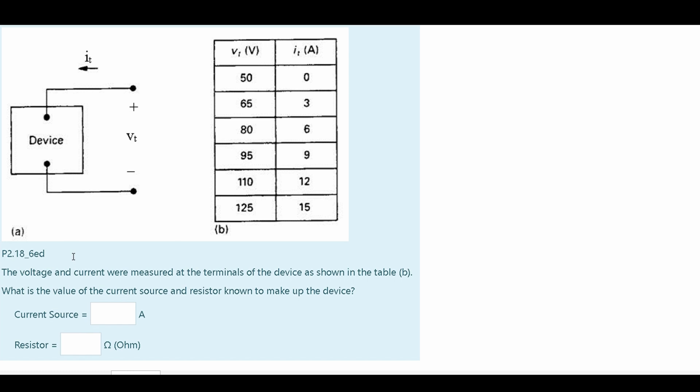We were asked, what is the value of the current source and resistor known to make up this device? Somewhere inside of here, inside of our circuit, we have a resistor in here. To find this, what we need to do is take the change of our voltage and our current, and then plug it into the formula to find resistor.